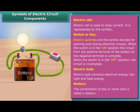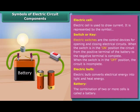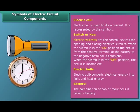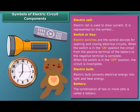The combination of two or more cells is called a battery. In a battery, the positive terminal of one cell is connected to the negative terminal of the next cell. Many devices such as torches, wall clocks and watches, toys, and TV remote controls are battery-operated devices.